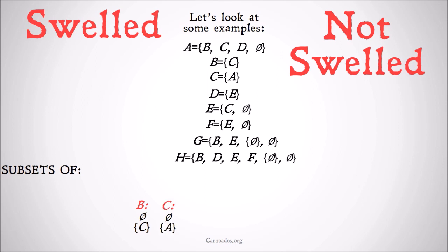What are all the subsets of C? The subsets of C are the null set and the set whose only member is A. A clearly contains the null set, but what about the set whose only member is A? A doesn't contain itself, but that's not what we're asking here. The set whose only member is A is defined as C, and C is contained in A. So A contains the set whose only member is A — even if it doesn't contain A itself — as well as the null set. So A contains all of the subsets of C.